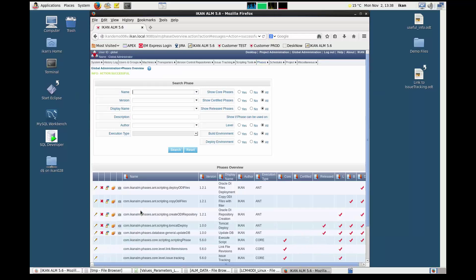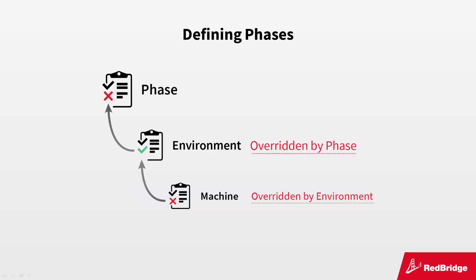Phases can be defined on phase, machine, or environment level. In this demo, we will keep the definition of the parameters as simple as possible. You can find an in-depth explanation of the different ways of defining parameters in the ICAN-ALM user guide. If you need advice on a particular situation, you can always contact the ICAN-ALM support team.